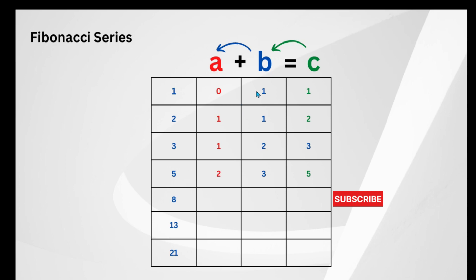The second time the loop runs, after writing the output, we transfer the b value of 1 to a. So a will have 1. Then we transfer c to b, so c will again have 1 — meaning 1 plus 1 produces 2. Next, b comes to a which is 1, and c comes to b which is 2, so 1 plus 2 produces 3. Then 2 comes to a and c comes to 3, so 2 plus 3 becomes 5.